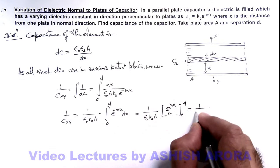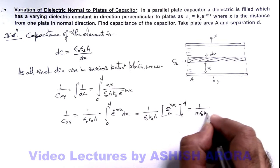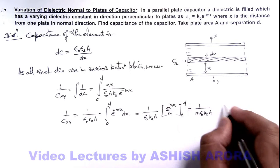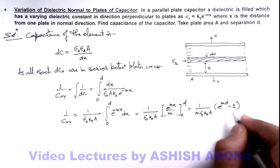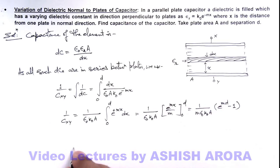So this is 1 by m epsilon_0 k_0 A, and substituting limits this will give us e to power md minus 1. So the value of C_xy we are getting is the reciprocal of this, which is m epsilon_0 k_0 A divided by e to power md minus 1. That is the result of this problem, the capacitance across the two plates of capacitor.